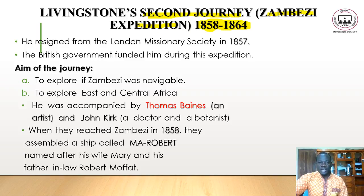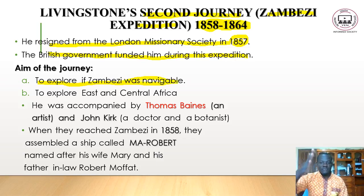Livingstone resigned from the London Missionary Society in 1857, and the British government funded him during this second expedition. The aims of the Zambezi Expedition included, first, to explore whether the Zambezi River was navigable from its source to its end, and second, to explore east and central Africa.